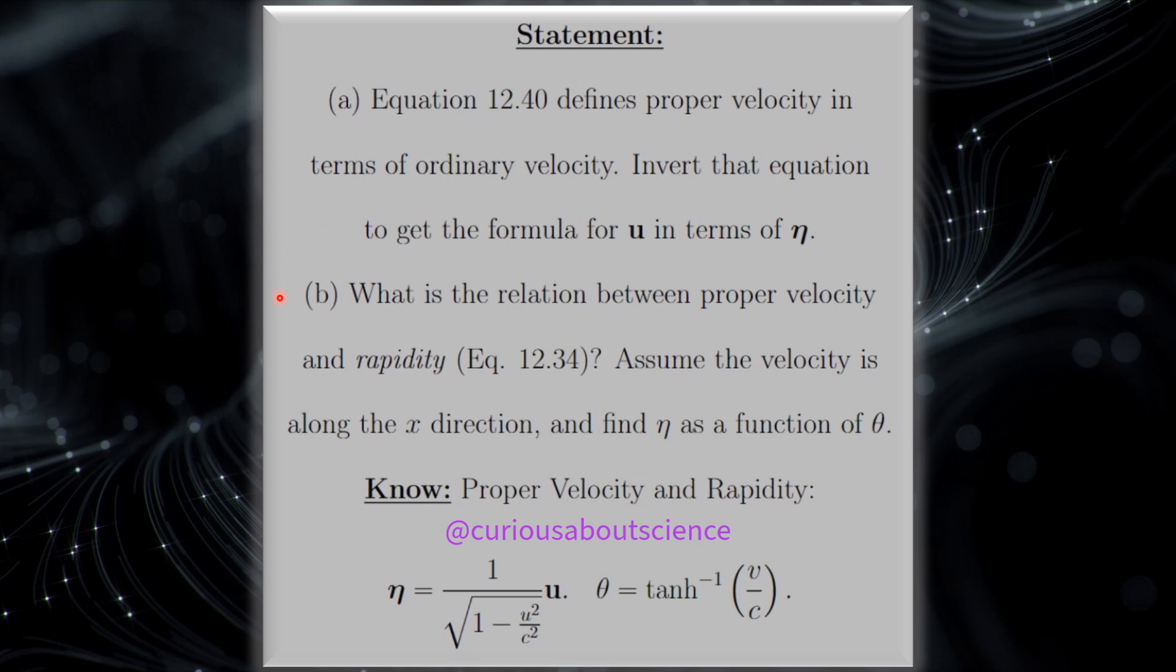Part B: What is the relationship between proper velocity and rapidity, equation 12.34? Assume that the velocity along the x-axis and find eta as a function of theta.